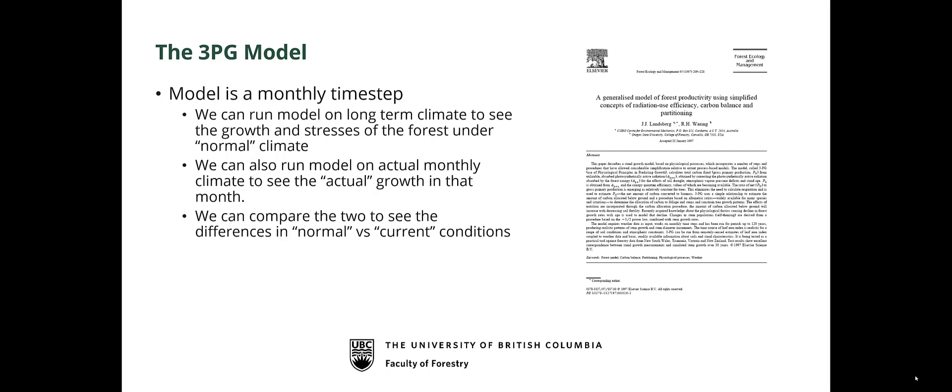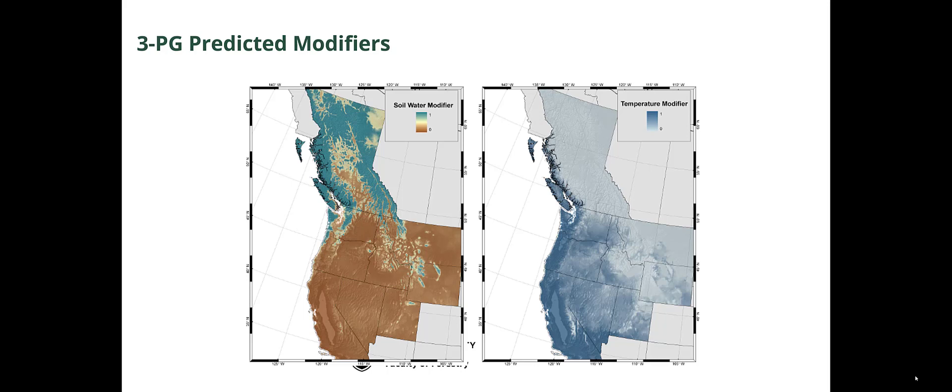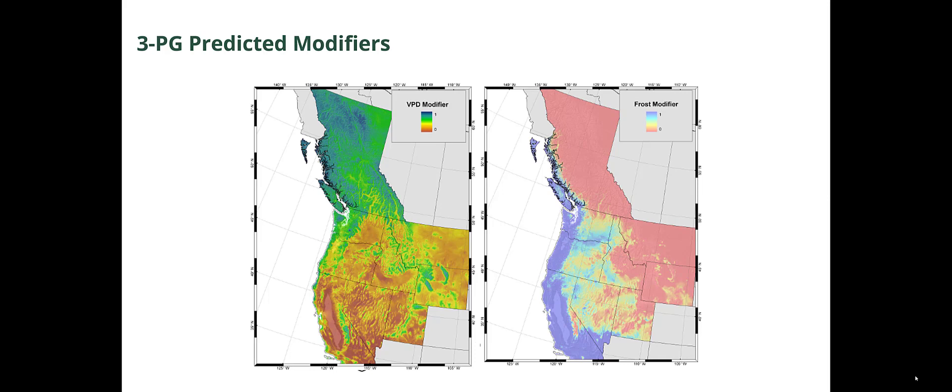3PG is a monthly time step model, so we just need monthly climate to predict the past and future growth of the forest. Here, for a generic tree species, we can see where there are major modifications to growth. For example, in British Columbia most tree species growing in summer are not impacted by temperature — it's ideal — but as we move further south, some species start to be much more impacted by temperature in summer. For soil water, many places in British Columbia along the coast are never water limited, but as we go into the southern US, many species are drought-impacted at some point in the year.